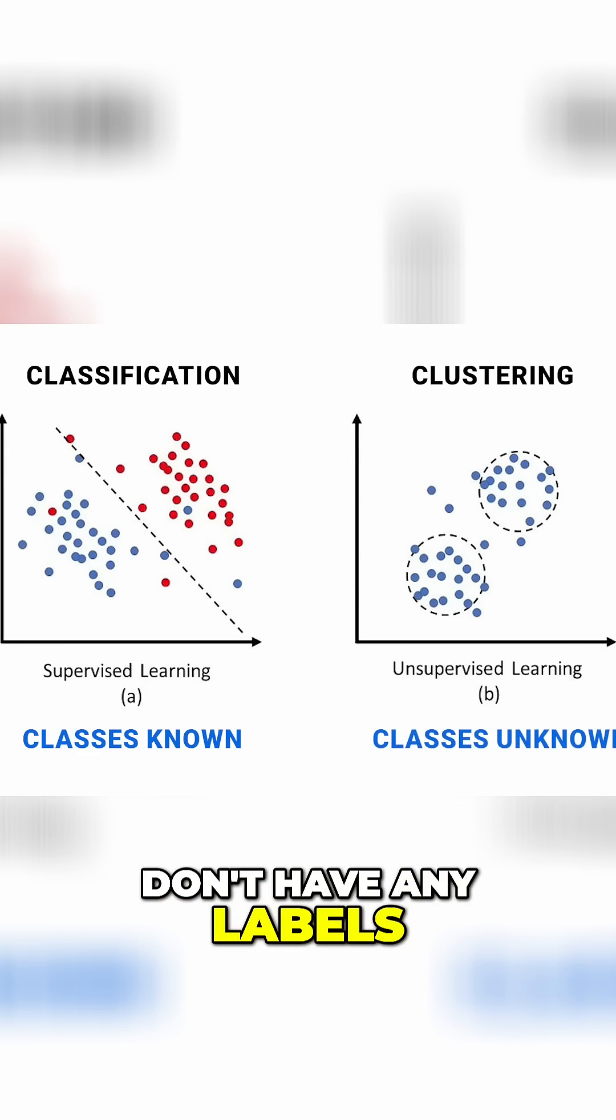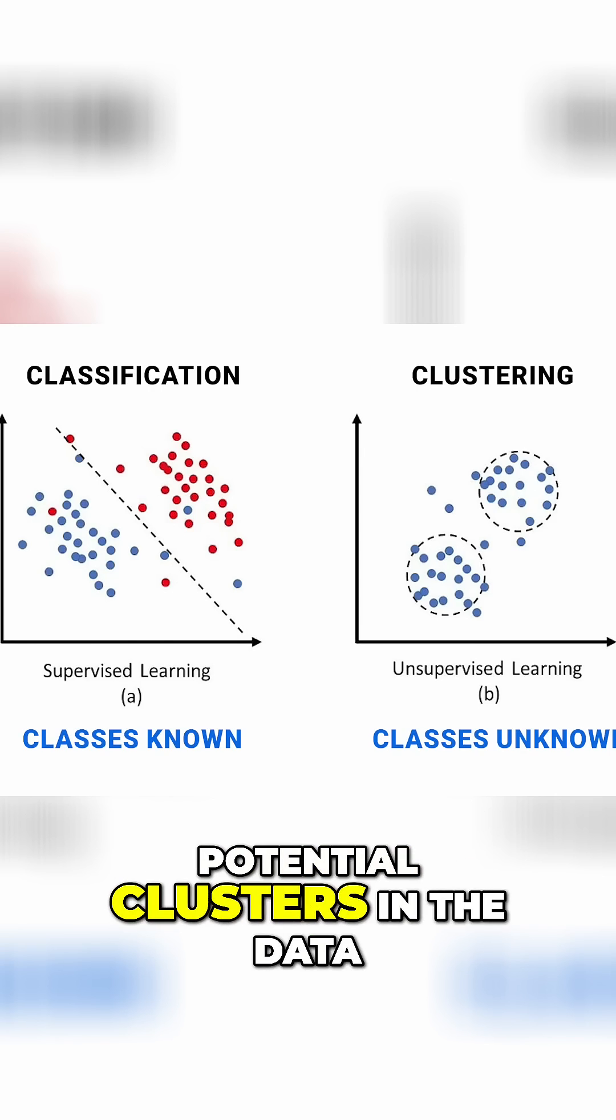Clustering is when we don't have any labels and want to find unknown clusters just by looking at the overall structure of the data and trying to find potential clusters in the data.